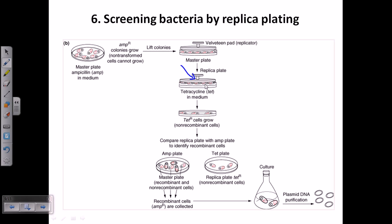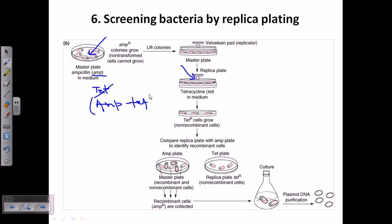Among the bacteria on the master plate, some are only ampicillin resistant, some are only tetracycline resistant, and some are resistant to both. Bacteria that are only tetracycline resistant cannot grow on the ampicillin plate because they will be killed by ampicillin. Only bacteria with ampicillin resistance, or resistance to both, can grow on that plate.